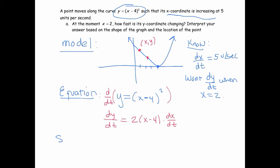And so now we substitute and solve. So dy/dt equals 2, this time x is 2, so 2 minus 4, and dx/dt is 5. So that becomes 2 times negative 2 times 5, so it's negative 20. And that would be units per second.